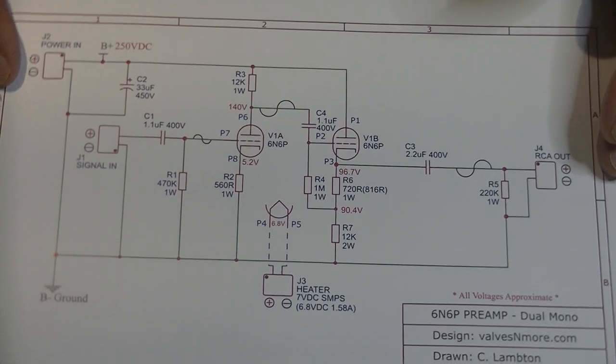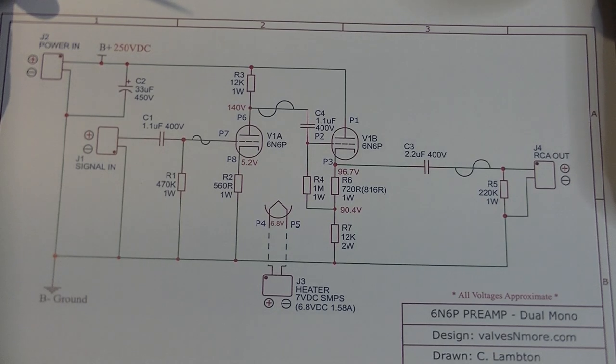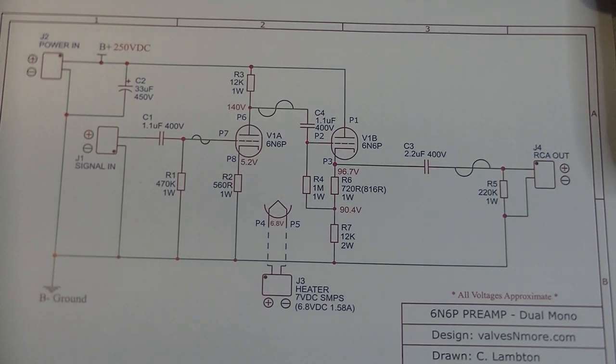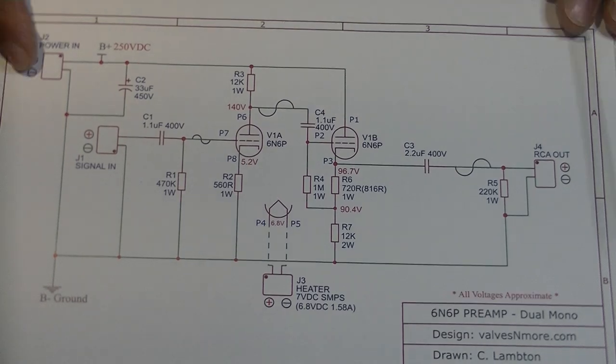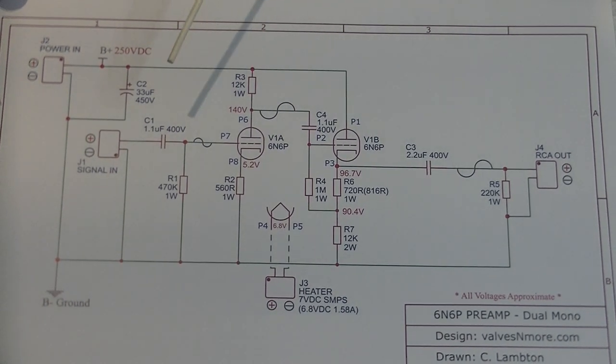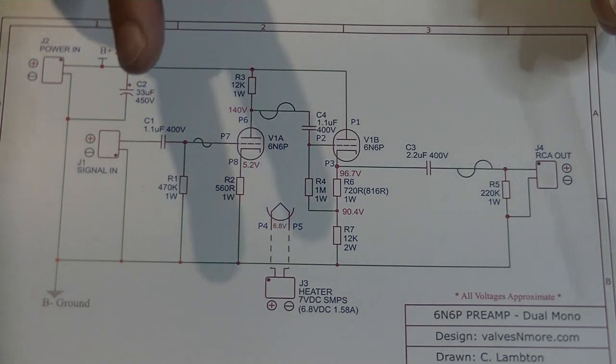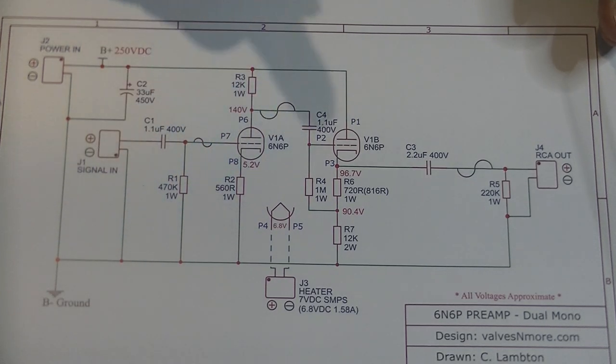But if you want to know how a triode sounds, one of the best things you can do is put it into a prototype preamp circuit, because that's where you can really hear a difference in a tube. If later on we decide to use the 6N6P as a driver tube, with that current capability it probably would be a fabulous driver tube in certain applications. But as I found out, it's also an absolutely excellent sounding preamp tube.